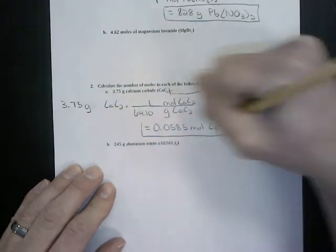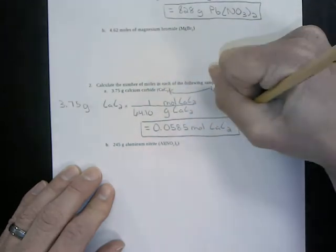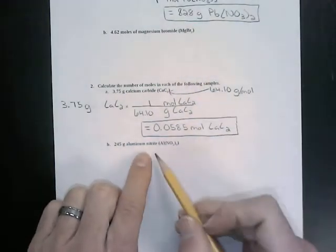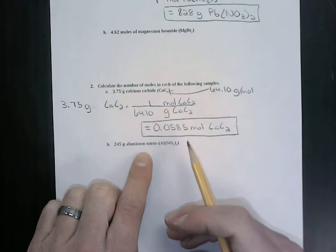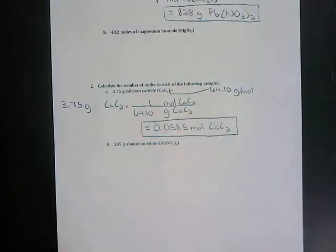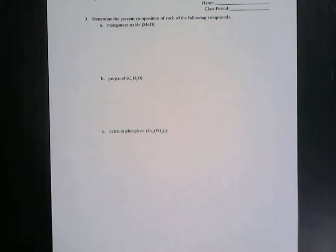I'm going to expect you to do part B of this problem. Remember, aluminum nitrate is a different compound, so it's going to have a different molar mass. We'll transition to the next page — we want to know the percent composition of each of the following compounds.